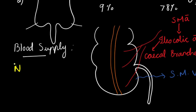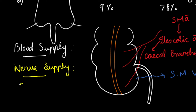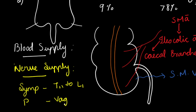Regarding nerve supply: sympathetic stimulation is from T11 to L1, and parasympathetic stimulation is through the vagus nerve.